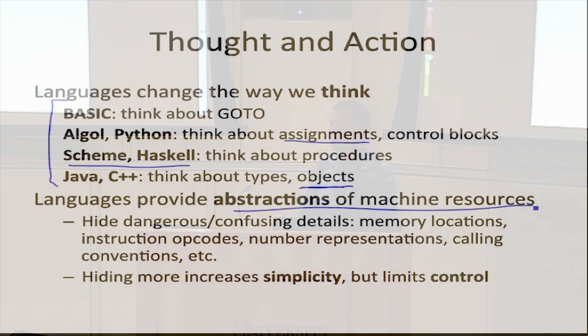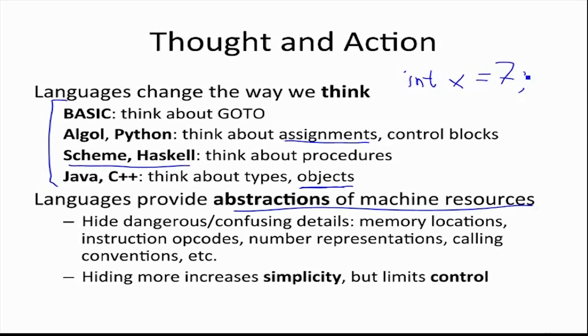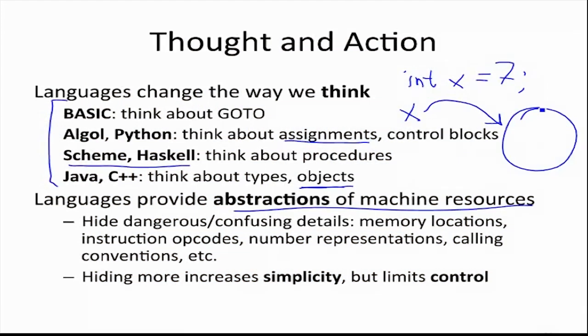The other thing languages do is provide abstractions. What's a variable in Java or C code? That's an abstraction — the name X is an abstraction for some state or location in memory. But as a programmer you're not really supposed to be thinking about that; you're thinking about X as a reference to some place where there's something that represents a value. It's providing an abstraction for however that is stored in the machine.